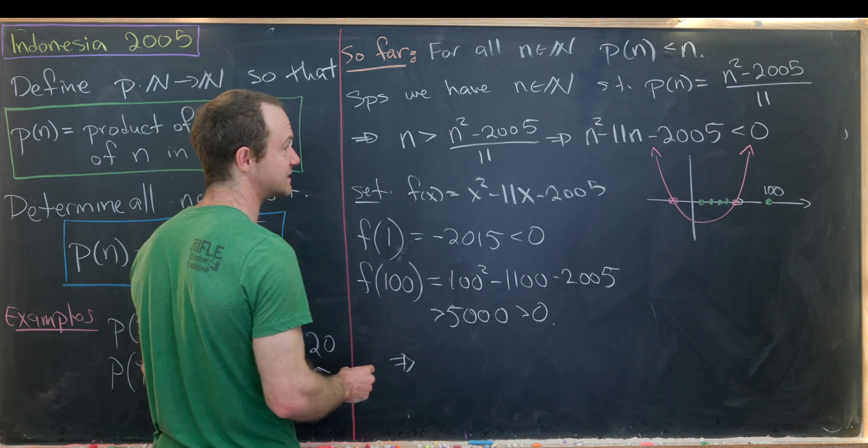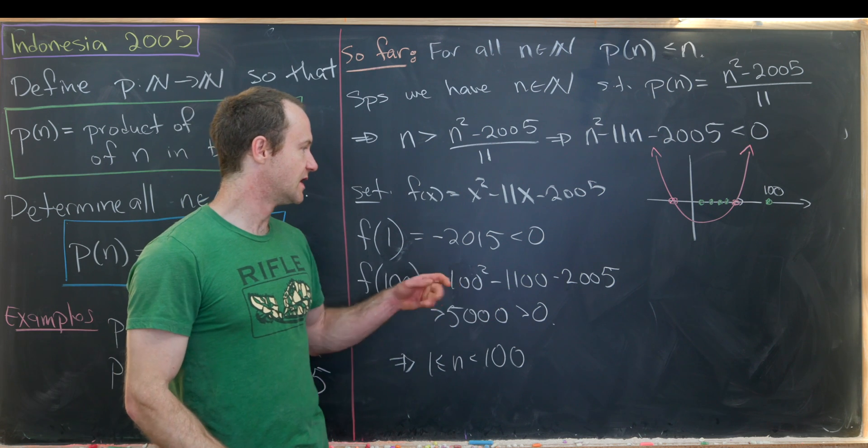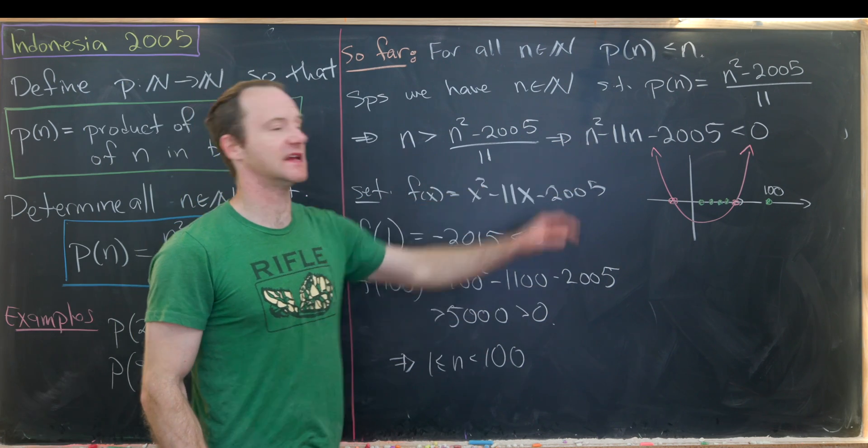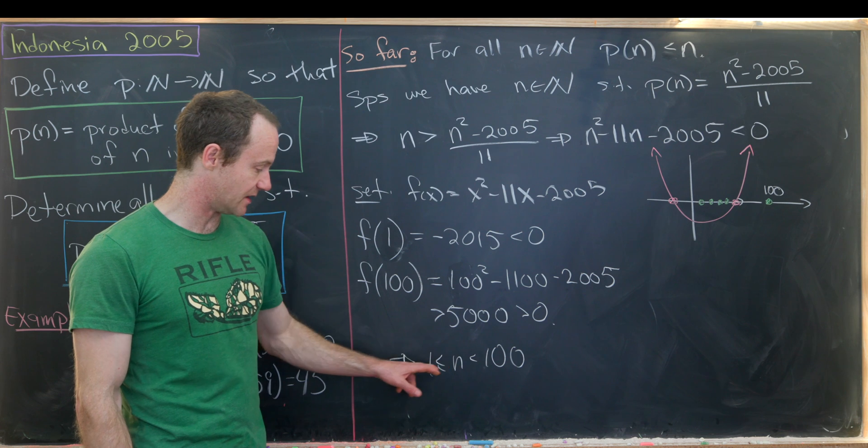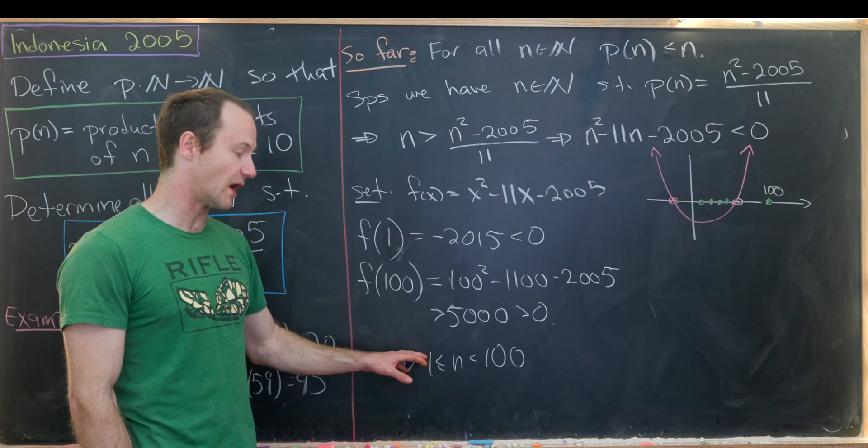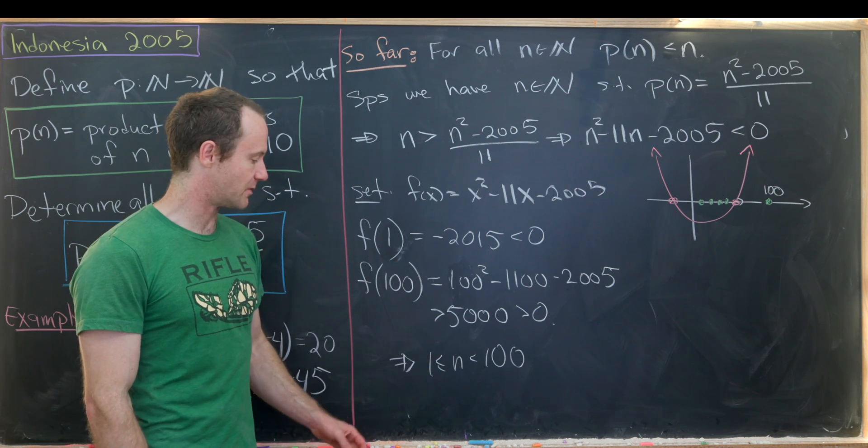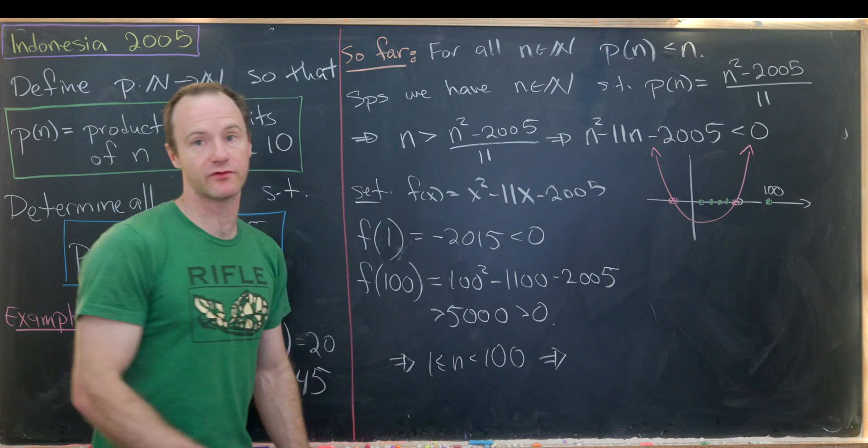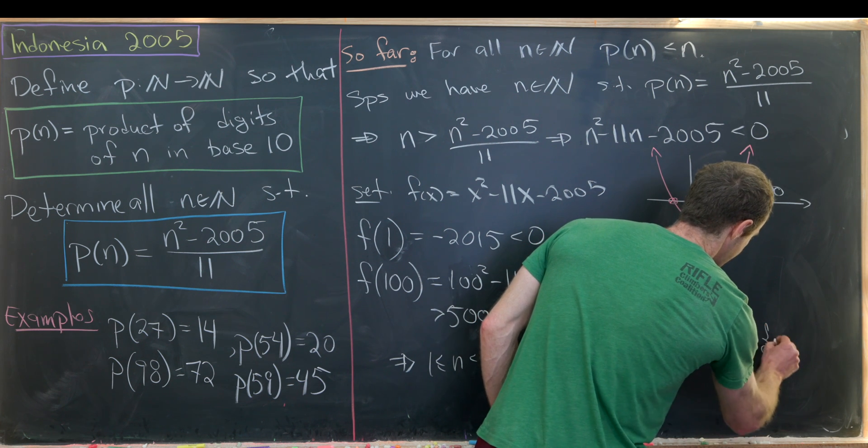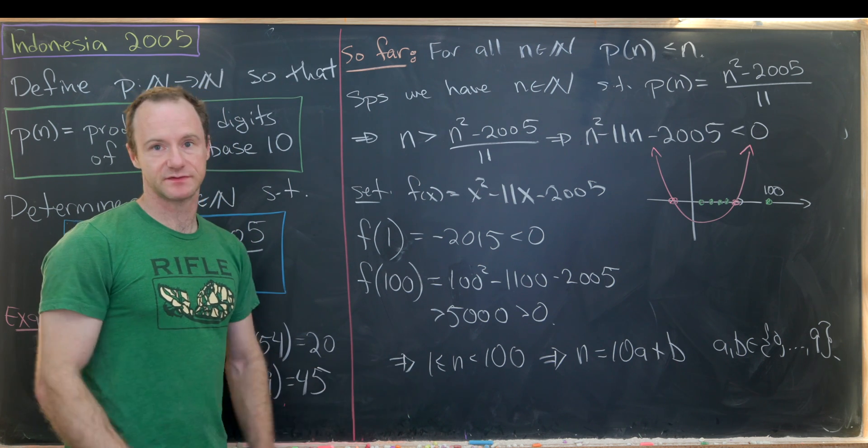Well what does that tell us? That tells us the important values of n will be somewhere between 1 and 100. Because if we get to 100 this parabola is always over the x-axis but that parabola being on top of the x-axis is equivalent to this inequality not being satisfied. So just to reiterate the values of n between 1 and 100 are the only possible ones for this inequality to be satisfied. In fact there are quite a few less because 100 is maybe a little bit too generous but like I said before this is good enough to solve the problem.